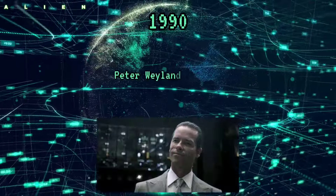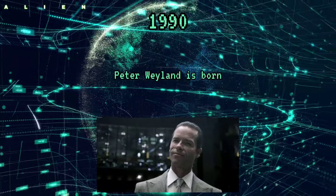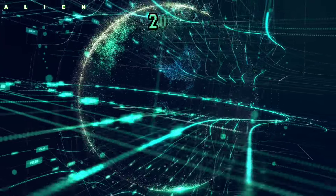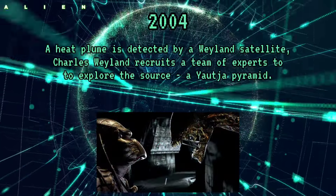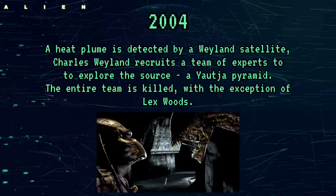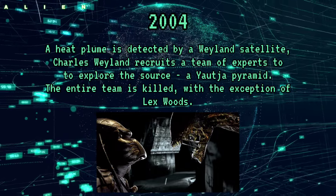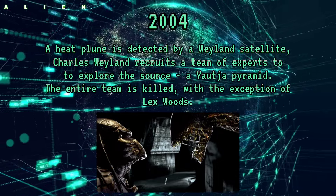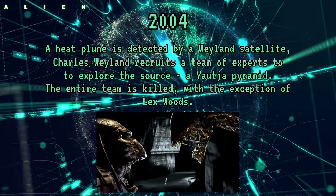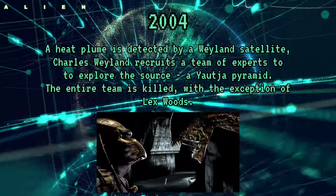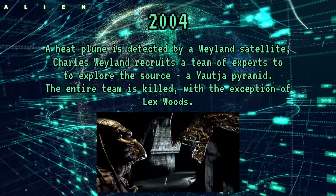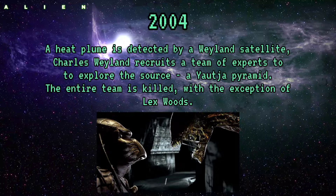1990: Peter Weyland is born. 2004: A heat plume is detected by a Weyland satellite, and Charles Weyland recruits a team of experts to explore the source — a Yautja pyramid. The entire team is killed with the exception of Lex Woods.